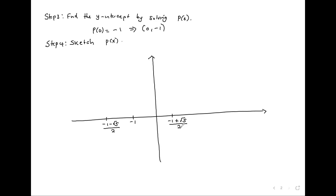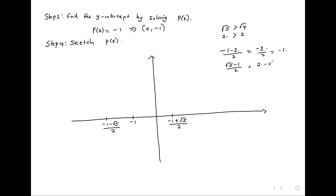To know which root is where: root 5 is bigger than root 4, and root 4 is 2, so root 5 is 2 point something. So negative 1 minus 2-point-something over 2 gives about negative 1 point something, meaning it is less than negative 1. And negative 1 plus root 5 over 2 gives 1 point something over 2, which is positive.